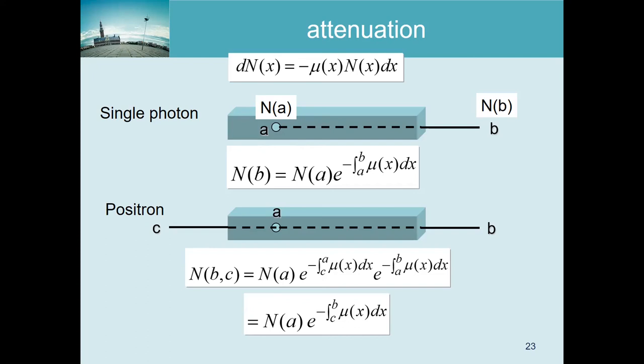Technically, this independence assumption is not entirely correct because the two photons emerged from the same event - they have orthogonal polarization and should be described by a single wave function. Their scattering probabilities are not entirely independent; they are entangled. However, physicists have checked and the entanglement effect is very small, so assuming independence gives almost the same results as accounting for entanglement.